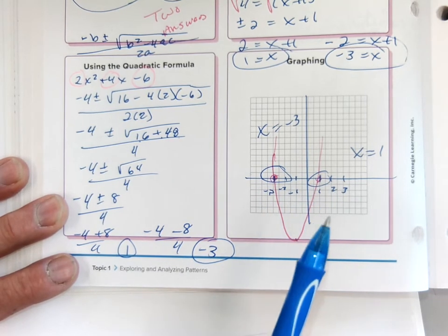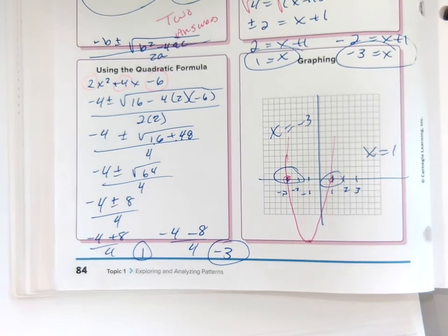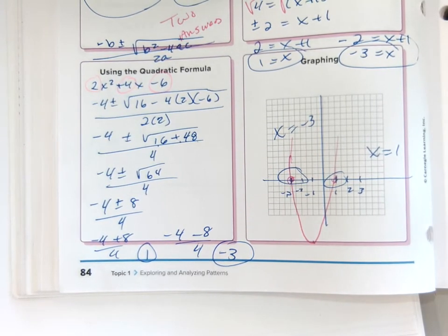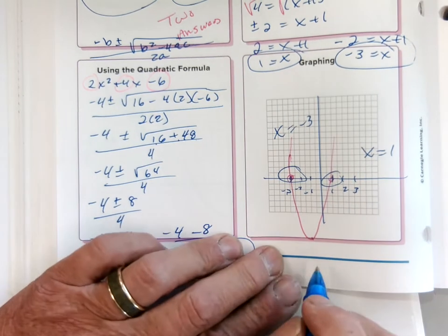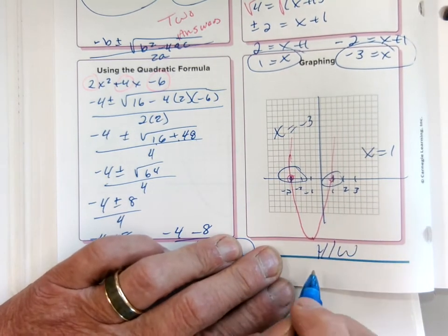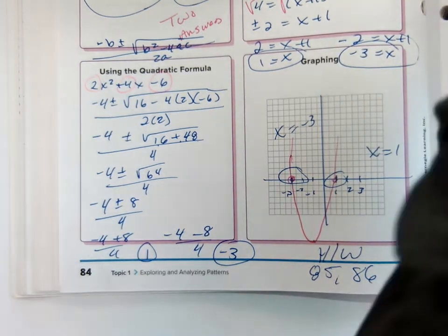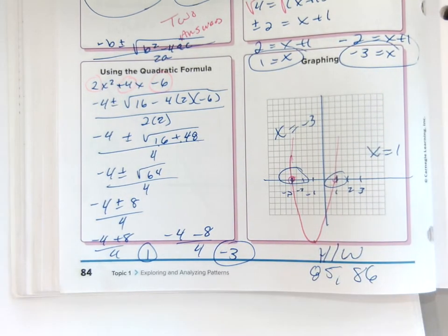Those x-intercepts are also zeros, which are also roots. That's all I wanted to show today. Homework is pages 85 and 86, and the test is tomorrow. We'll see you tomorrow.